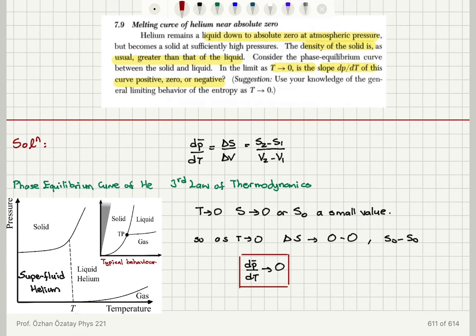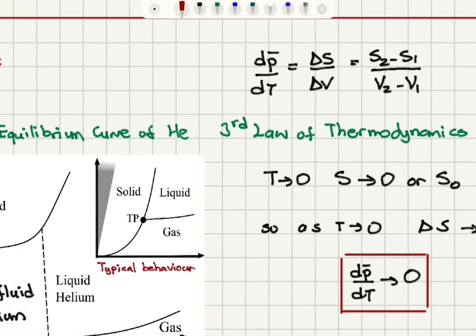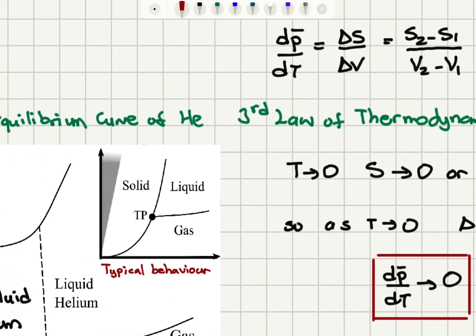Now what we see is that the slope between the solid phase and the liquid phase approaches zero here because of the third law of thermodynamics. If you look at typical behavior of other substances that display a triple point,